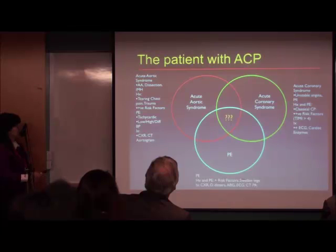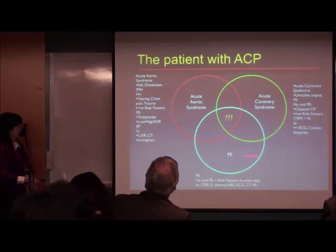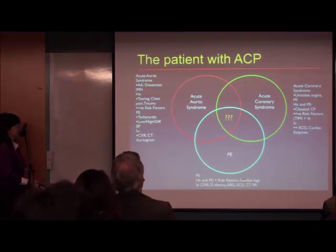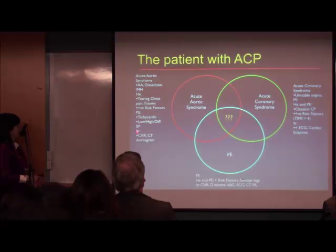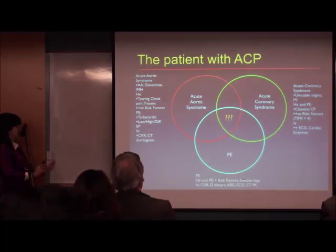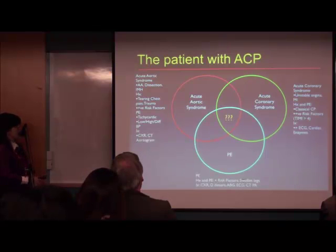Basically, the patient comes in with acute chest pain in the ED. There are three big categories of conditions they could be suffering from. First, is it an acute aortic syndrome? Does the patient have an aortic aneurysm, a dissection, or an acute intramural hematoma? Ideally, patients would come in with classical tearing chest pain, trauma history, positive risk factors, clinical signs pointing to aortic aneurysm or dissection, and a chest x-ray showing mediastinal widening.